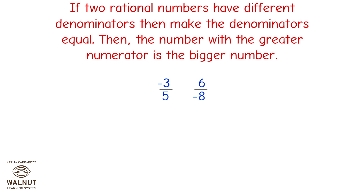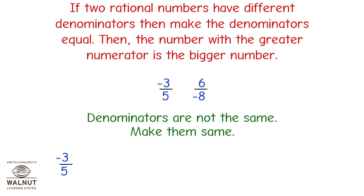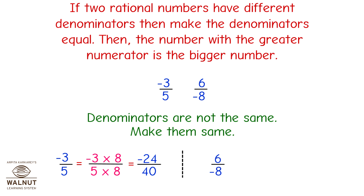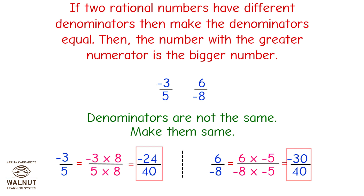Compare minus 3 upon 5 and 6 upon minus 8. Denominators are not the same, so make them the same. Minus 3 upon 5 equals minus 3 × 8 upon 5 × 8, which is equal to minus 24 upon 40. 6 upon minus 8 equals 6 × minus 5 upon minus 8 × minus 5, which is equal to minus 30 upon 40. Here the denominators are the same, so minus 3 upon 5 is greater than 6 upon minus 8.